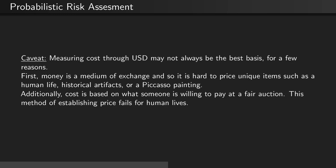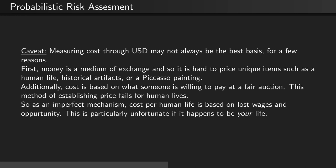or particular works of art, such as a Picasso painting. Additionally, cost is based on what someone is willing to pay at a fair auction. This method of establishing price fails for human lives. So, as an imperfect mechanism, cost per human life is based on lost wages and opportunity. This is particularly unfortunate if it happens to be your life.